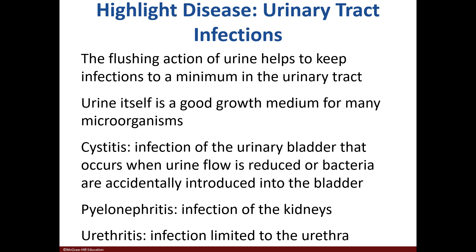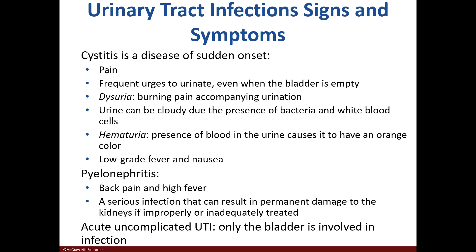Urinary tract infections may target the bladder, kidney, or urethra. Generally, urine flushing helps to keep pathogens out; however, urine is a good growth medium. Cystitis is an infection of the bladder, pyelonephritis is an infection of the kidney, while urethritis is a urethral infection. Symptoms include pain, frequent urge to urinate with burning, cloudy urine, and fever. If the kidney is affected, back pain and fever will be seen.